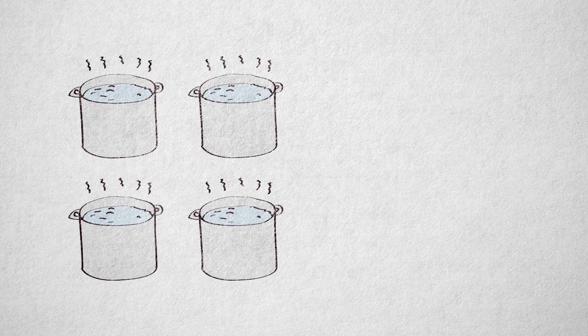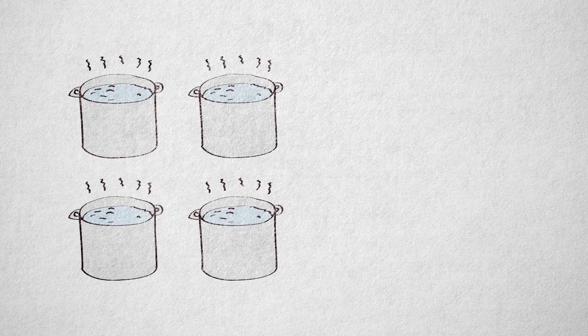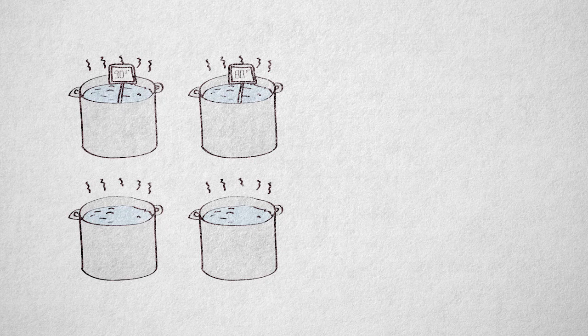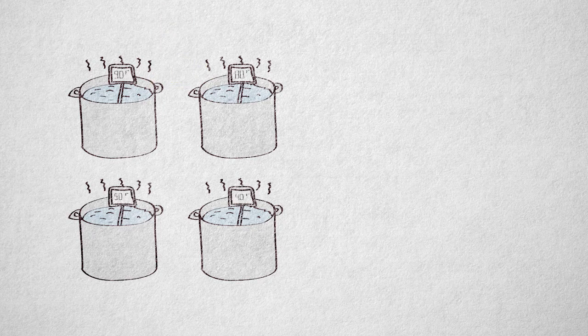Suppose I'm heating up 4 pans filled with water on a stove, and I measure temperature with a thermometer in degrees Fahrenheit. A pan of water reading 90 degrees Fahrenheit is hotter than one that reads 80. We can verify this by sticking our hand in. And the same goes for two pans reading 40 and 50 degrees.